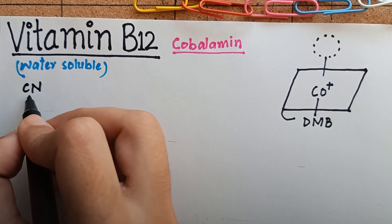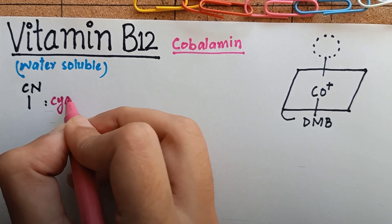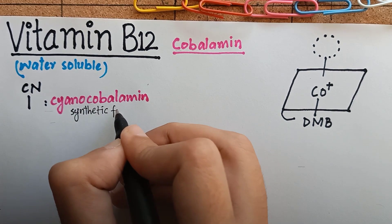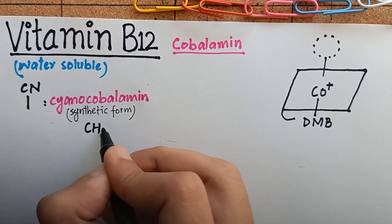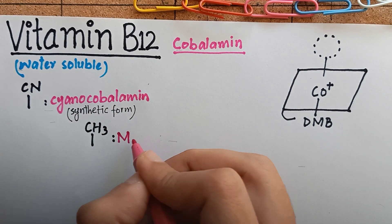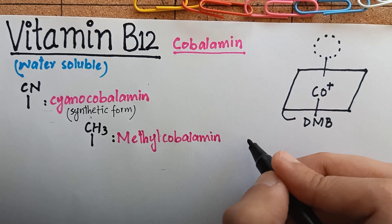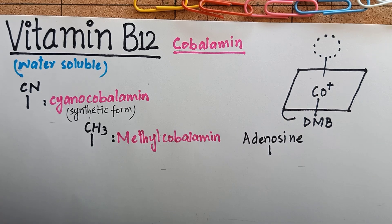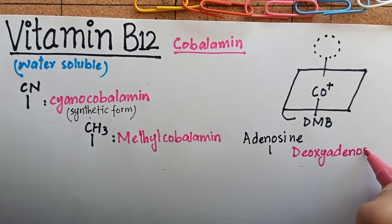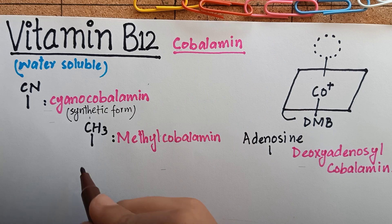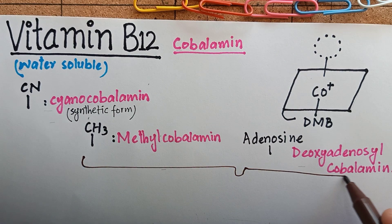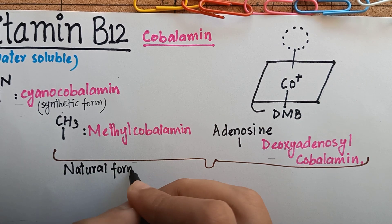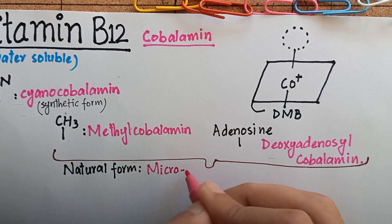When this substituent group is a cyanide, it becomes cyanocobalamin. This is the synthetic form of vitamin B12. When the substituent group is methyl, it becomes methylcobalamin. And when the substituent group is an adenosine, it becomes deoxyadenosylcobalamin. These two forms, methylcobalamin and deoxyadenosylcobalamin, are the natural forms of vitamin B12, synthesized only by microorganisms.